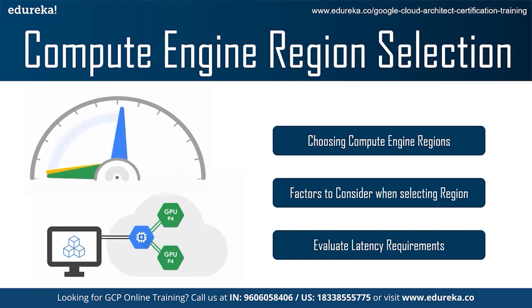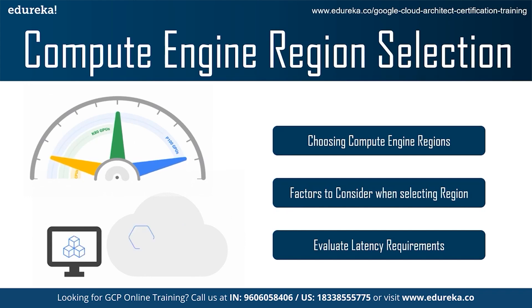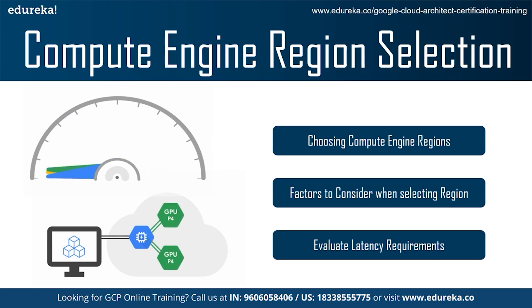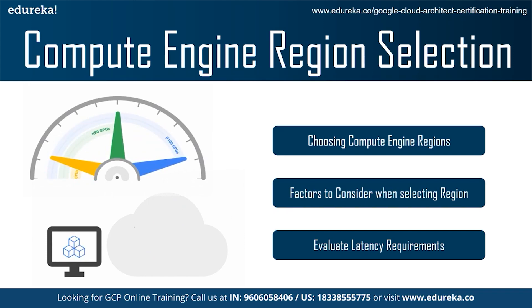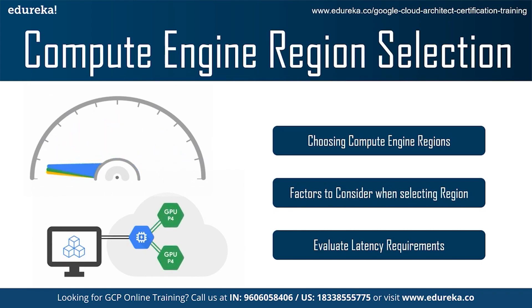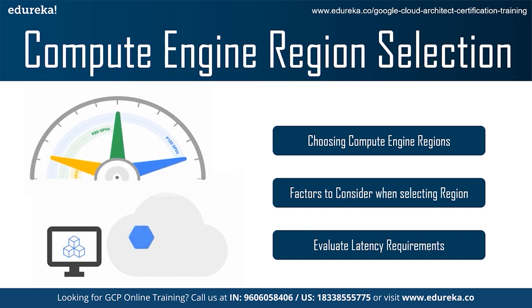The third factor is co-location with other Google Cloud services — co-locate your Compute Engine resources with other Google Cloud services wherever possible. While most latency-sensitive services are available in every region, some services are available only in specific locations. The fourth factor is machine type availability: not all CPU platforms and machine types are available in every region, and availability differs by region and even zone. The fifth factor is resource quotas — make sure that you request sufficient quota for the regions you plan to deploy in.